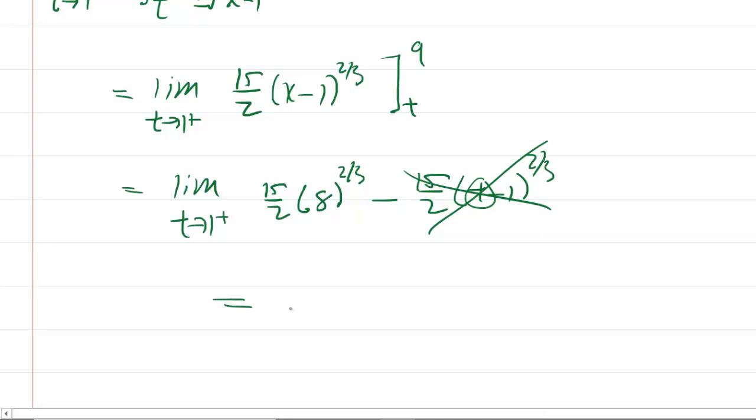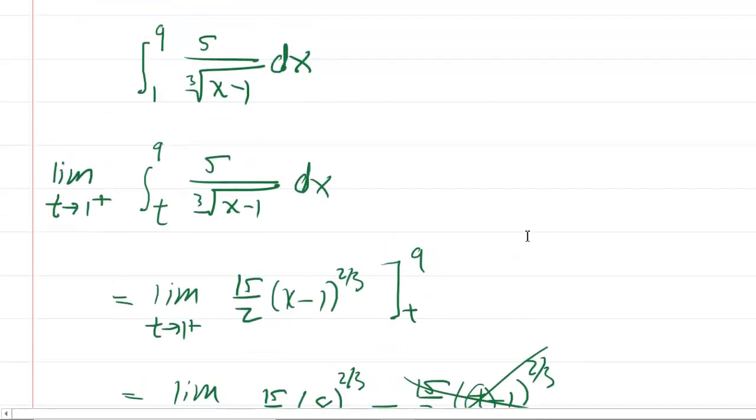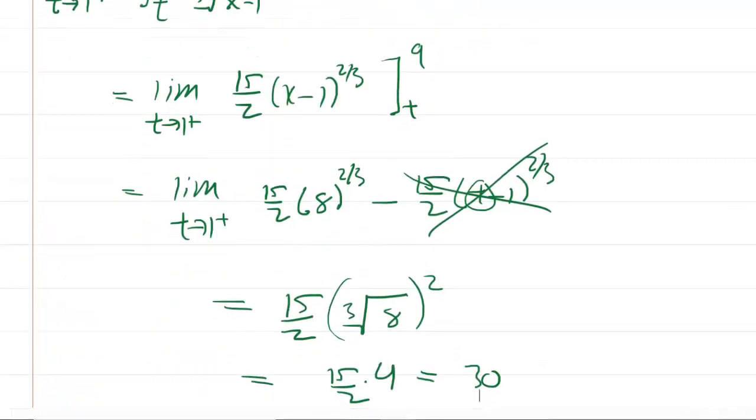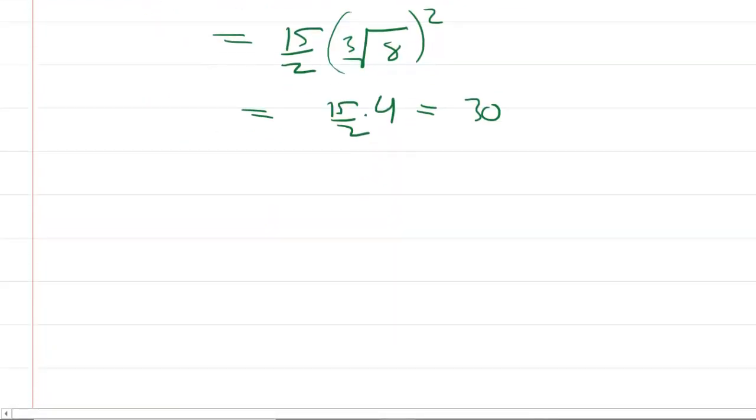You're left with 15 halves times the cube root of 8, all of which would be squared. The cube root of 8 is 2. 2 squared is 4. You multiply this out, and you're going to get 30. So now all we have to do is add the first integral, which was the negative 15 halves, to the second integral. And then that's going to give us our answer.